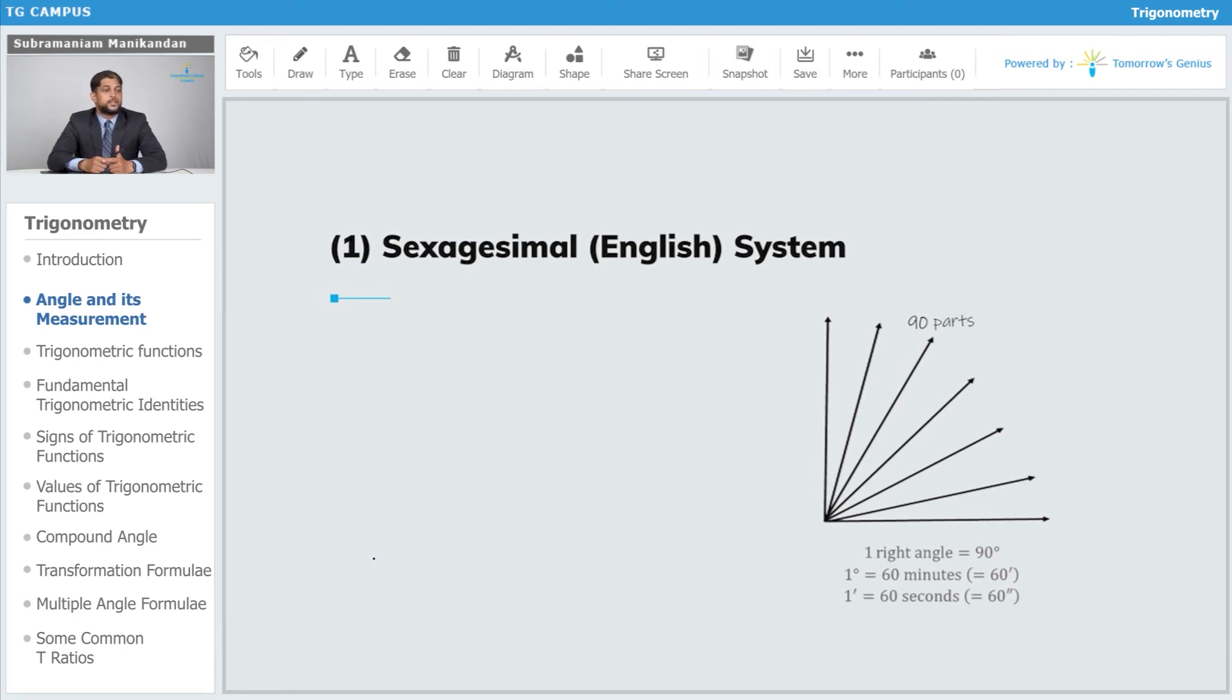So therefore, in this sexagesimal system, one complete rotation comprises 360 equal units. Each of these is called one degree, and one complete rotation consists of four right angles. Thus one right angle equals 90 degrees. Each of these degrees equals 60 minutes, and each of these minutes is comprised of 60 seconds.